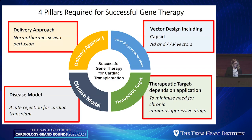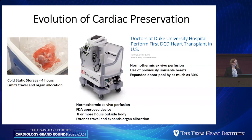The first thing I'll talk about is the delivery approach of normothermic ex vivo perfusion. But first, I need to discuss the evolution of cardiac preservation. Until not too long ago, donor hearts were acquired from brain dead donors, arrested with cold cardioplegia, washed out, placed in a bag of preservation solution, and stuck in an ice cooler. This was very limiting — it limited the time out, the travel distance, and organ allocation.